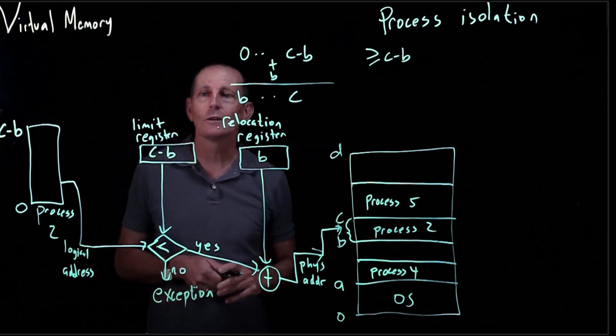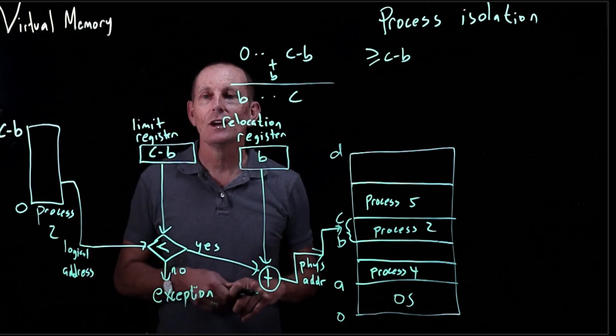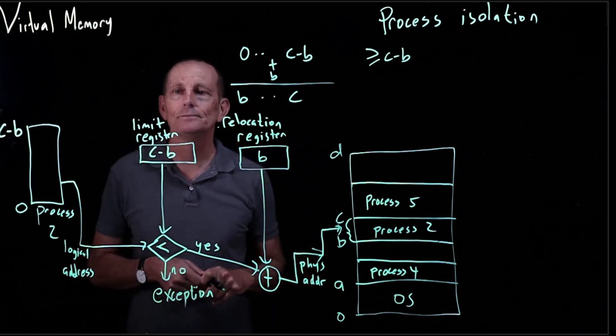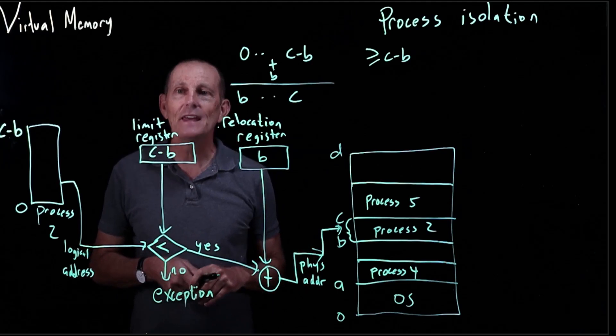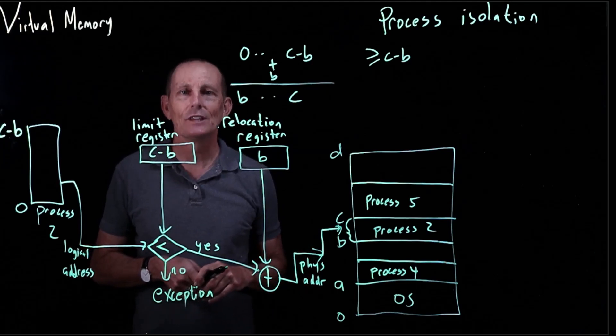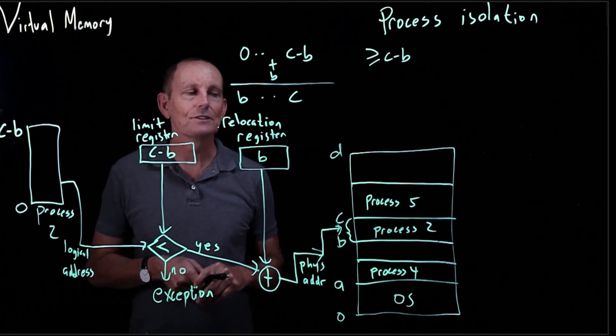Just like we could get a divide by zero exception, we could get an out of limit exception. And this provides us the address space isolation that we desire.